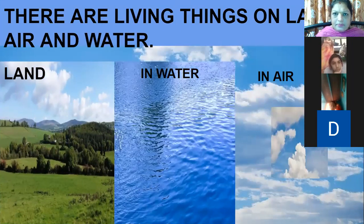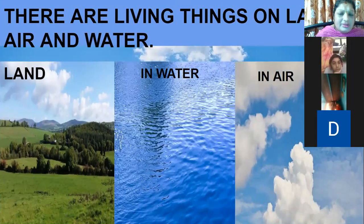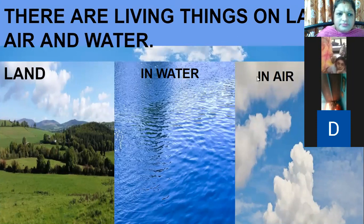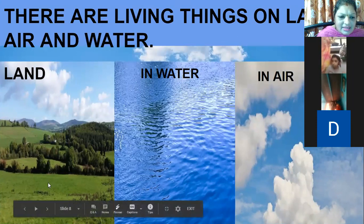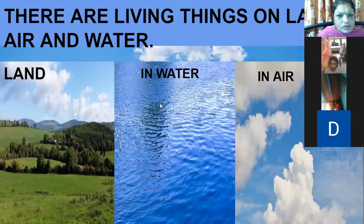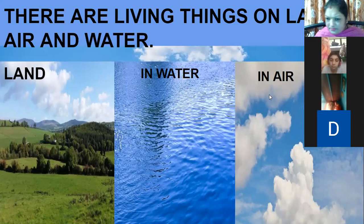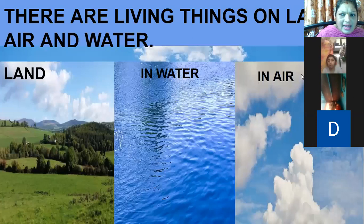There are living things which live on the earth. Some are living on land — for example, human beings and animals. There are living things living in water also — for example, fish and other marine animals. And there are living things which are in the air — for example, birds. So living things are on land, in water, and in air.